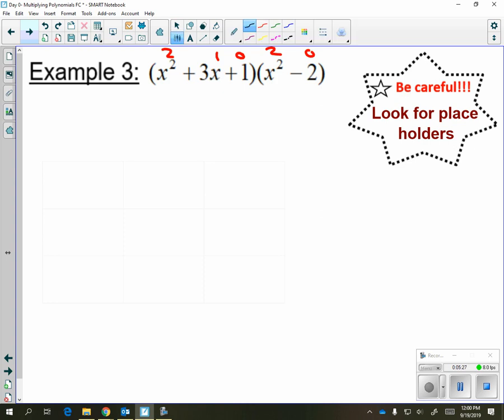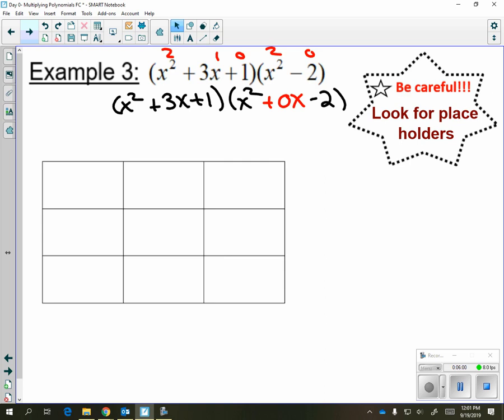That means we're going to rewrite this problem as x squared plus 3x plus 1. And the next one, we're going to write it as x squared plus 0x. Because if it's 0x, we're really not changing anything. Minus 2. Now your exponents go to 1, 0x, right? So now that everything's in order, we have a trinomial times a trinomial. That's a box that is 3 by 3.